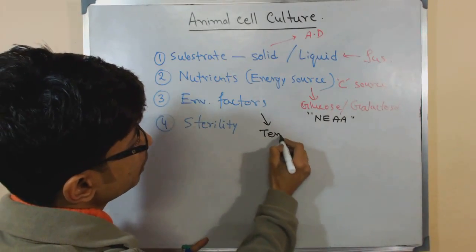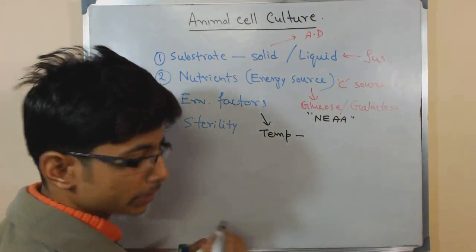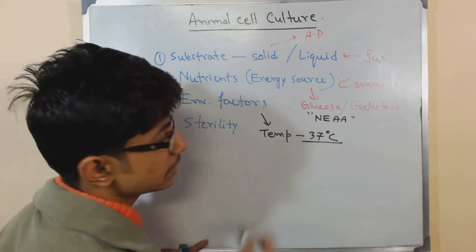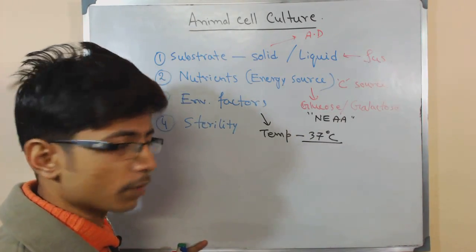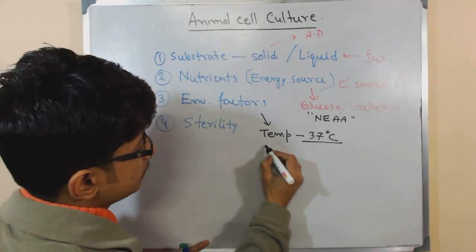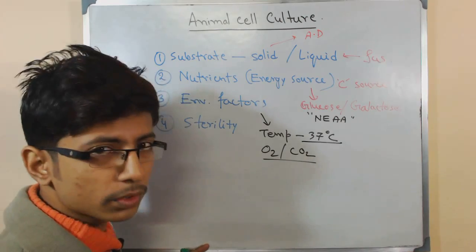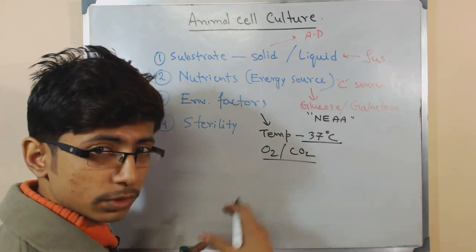Environmental factors means temperature for incubation - that is most of the time 37 degrees Celsius because this is the physiological temperature of our body. And we require oxygen and carbon dioxide balance, that is very important depending upon the cell that grows there.